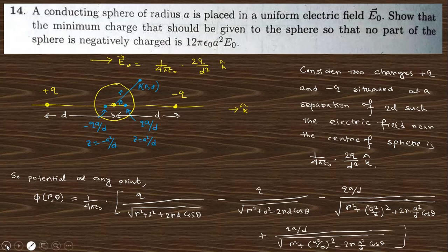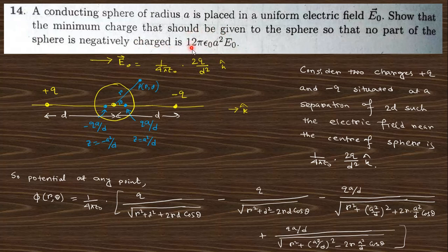Question 14: A conducting sphere of radius a is placed in a uniform electric field E0. Find the minimum charge that should be given to the sphere so that no part of the sphere is negatively charged. To solve this, we consider the electric field by replacing it with two charges: a +q charge and a -q charge.